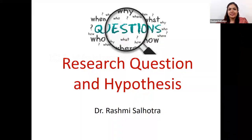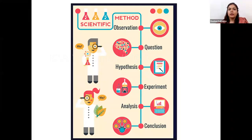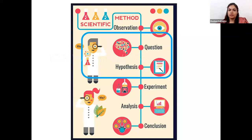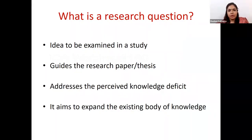Thank you for the kind introduction. Today's topic is research question and hypothesis. This flowchart shows where the research question and hypothesis fit in research methodology. The first step in designing any research is to observe a lacuna in the literature and raise some questions. A research question is the second step in the scientific method, and the third step is generating a hypothesis. A research question is an idea we want to examine during our study. It guides the research paper or thesis and addresses a perceived knowledge deficit, aiming to expand the existing body of knowledge.